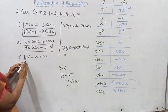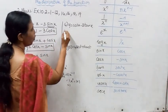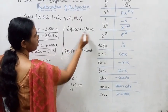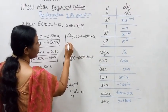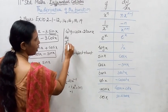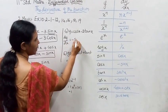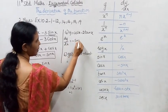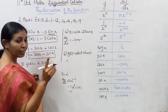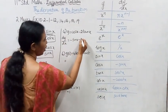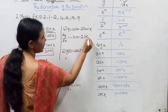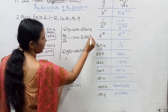Third sum. Using the fourth theorem: y = cos x minus 2 tan x. Finding dy/dx: derivative of cos x is minus sin x. Minus 2 into derivative of tan x is secant square x. So dy/dx = minus sin x minus 2 sec²x.